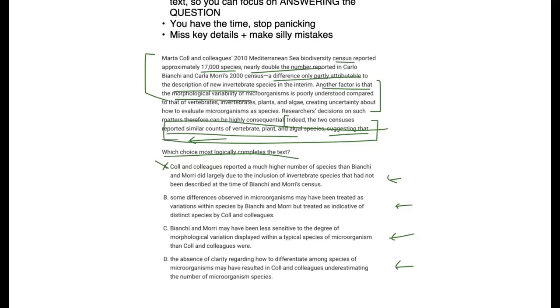Another factor is the morphological variability of microorganisms is poorly understood compared to the vertebrae. So there's uncertainty, and so uncertainty about how to evaluate those microorganisms. And therefore, the way that researchers evaluate them might differ. Therefore, a really easy way to just evaluate this is that the group that reported more of these species interpreted the microorganisms differently. Therefore, the answer here will be B.